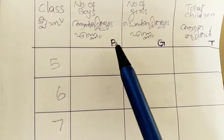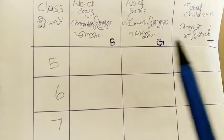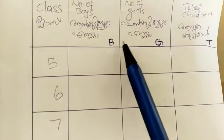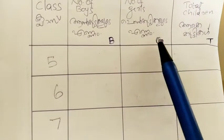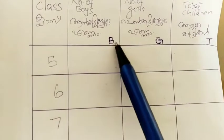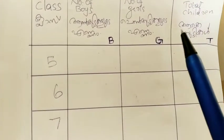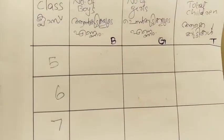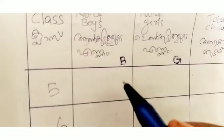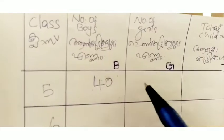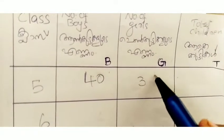For example, our class is a standard A classroom. We have 7 classes. Now, number of boys: 45. In the 5th class, the number is 40, and the 5th class girls is 30.